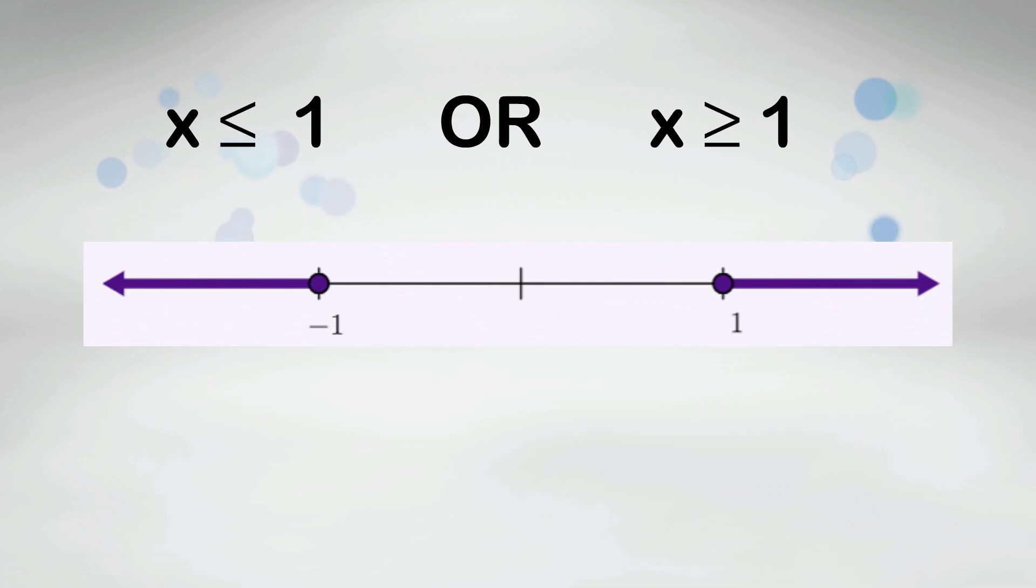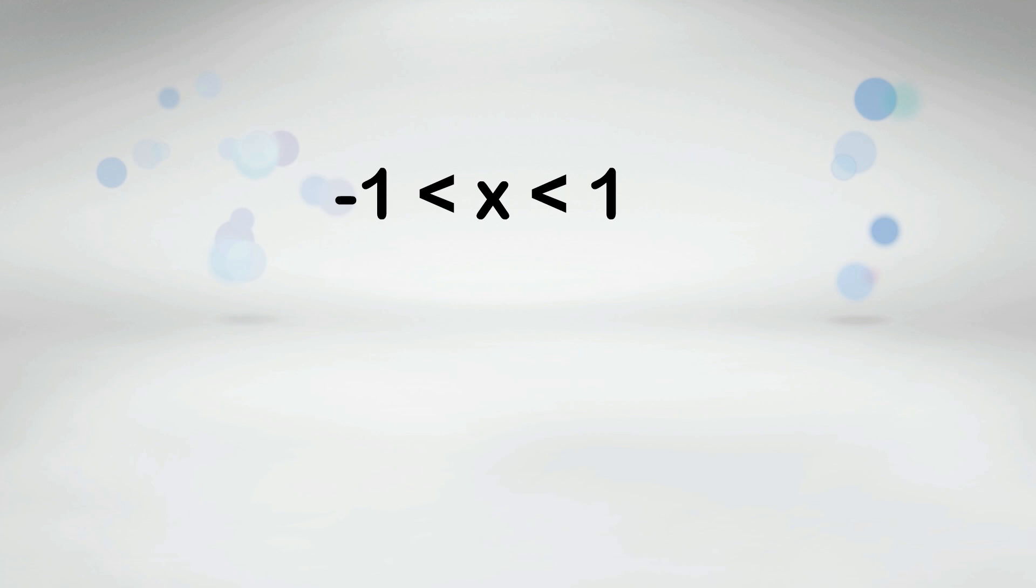If the inequality has or, the graph will point in two different directions. If the variable is in the middle of two inequalities, the graph will be between the two points. For example, 4 is less than x which is less than 9.